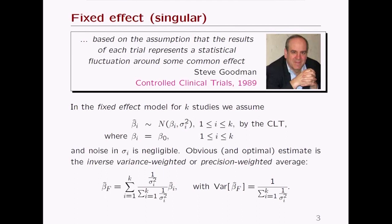Beta-hat_f is a simple linear combination of the beta-hat_i's. Assuming we know the sigmas with essentially complete knowledge, the variance of that estimate follows straightforwardly and involves the inverses of the variances — a simple exercise in linear algebra.